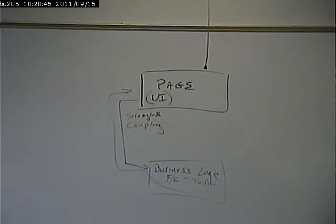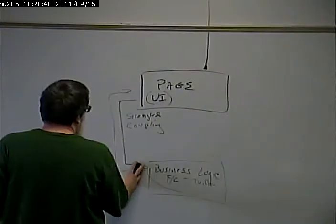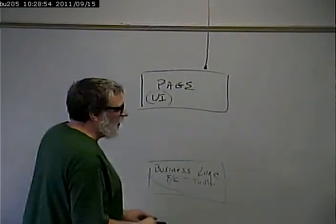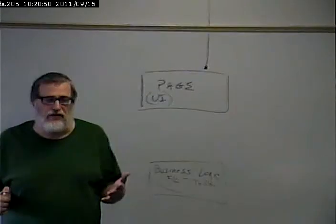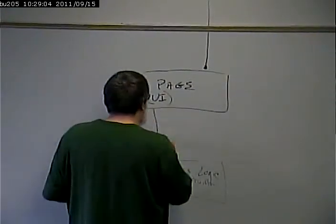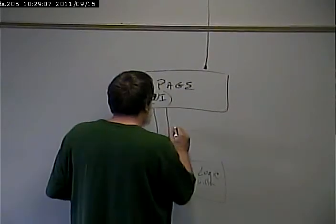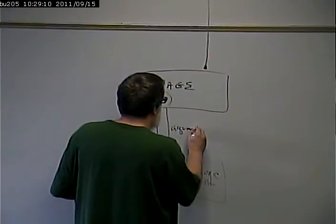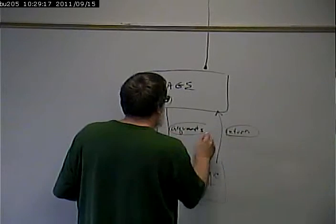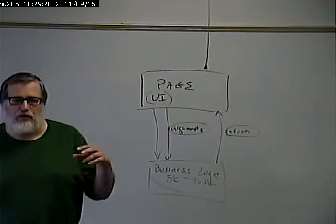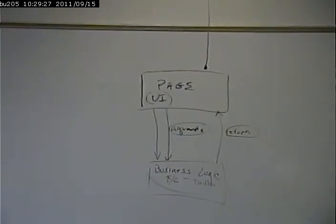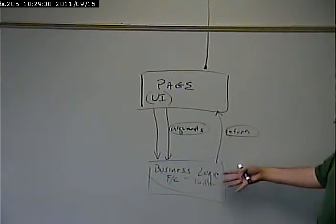We want things to be loosely coupled. Loosely coupled means they don't know much about what's going on in each other, and they only communicate in a very specialized way — through functions, through arguments and return values. The only thing the page is going to do is send the function some arguments, the function is going to return a return value, and that's the only way those two things communicate. That will make this code reusable.